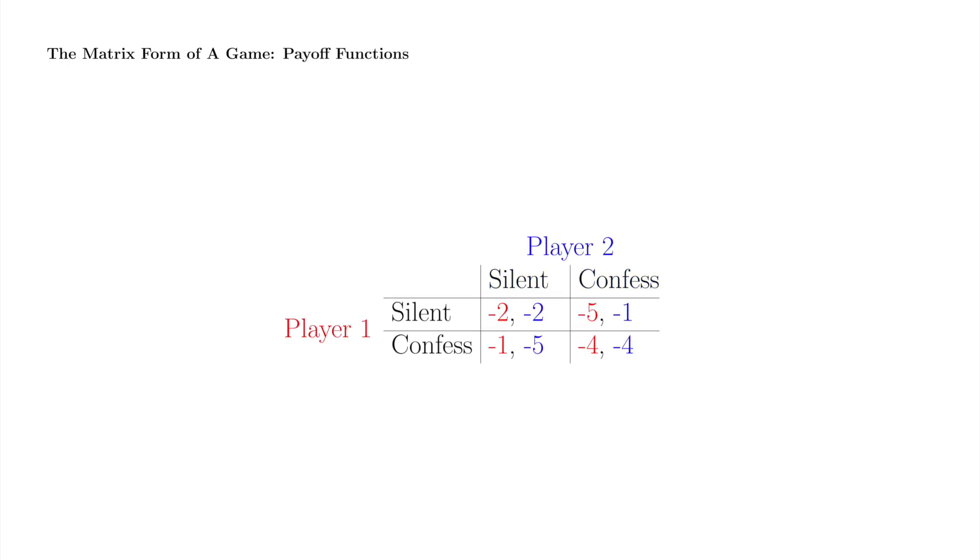The remaining entries in the matrix record the player's respective payoffs. The convention is that the number on the left, in red here, is the row player's payoff, and the number on the right, in blue, is the column player's payoff.